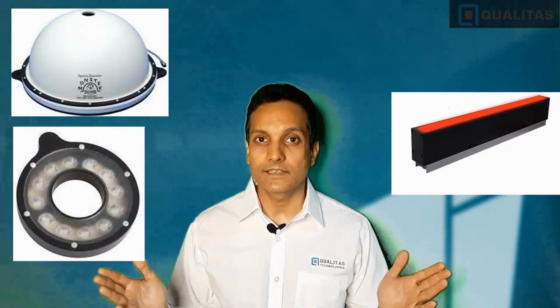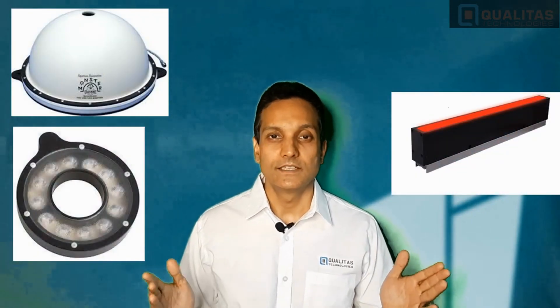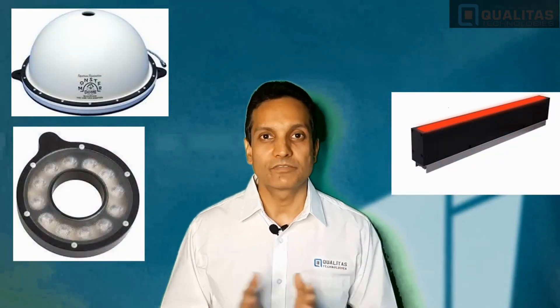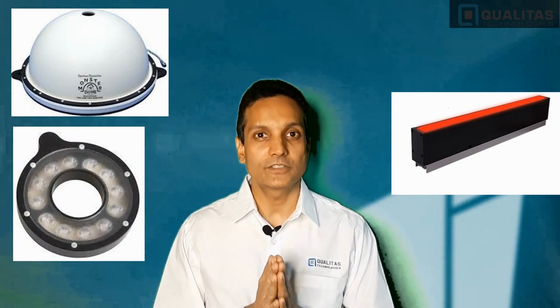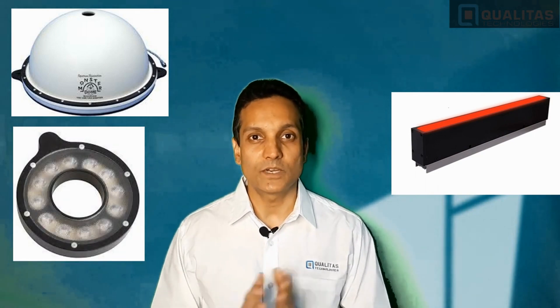The choice of the right type of light is very critical. You have dome lights, line lights, ring lights, low angle lights — various types of lights. Make sure that you choose the right one which gives you the best contrast and the best consistency under all conditions for your inspection task.